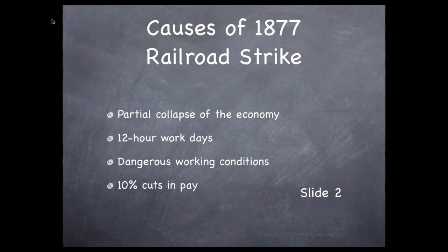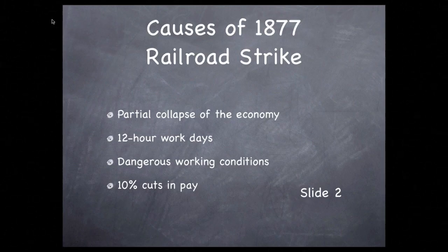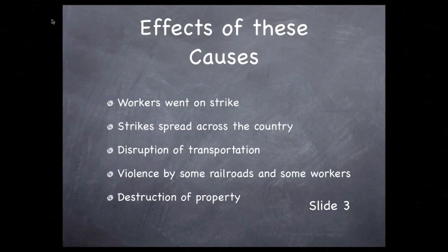Partial collapse of the economy, 12-hour work days, dangerous working conditions, and a 10% cut in pay — these are all causes of the Great Railroad Strike of 1877. The effects associated with these causes are also not simple: railroad workers went on strike, strikes spread across the country, there was disruption of transportation and violence by some railroads and some workers, as well as destruction of property.